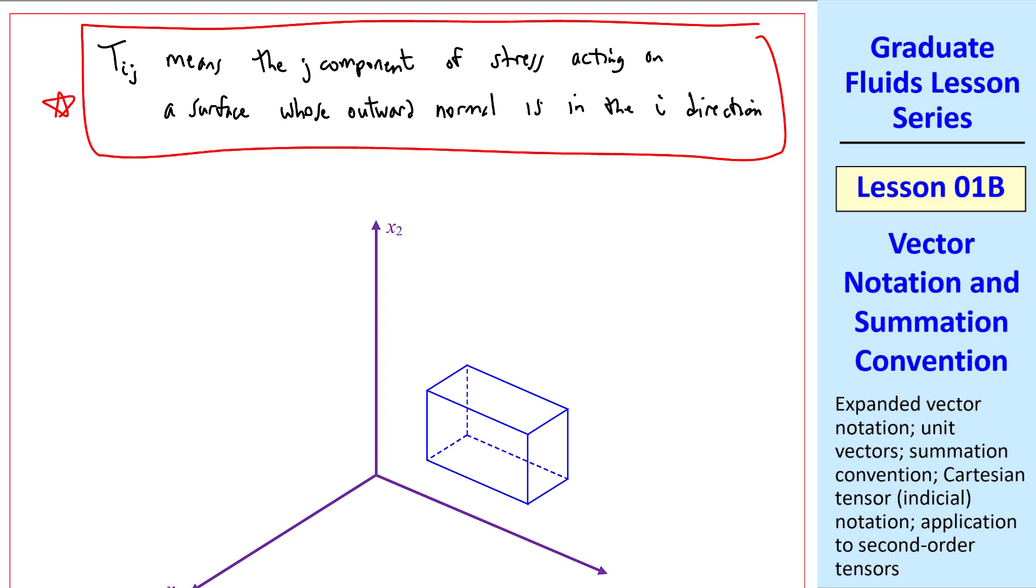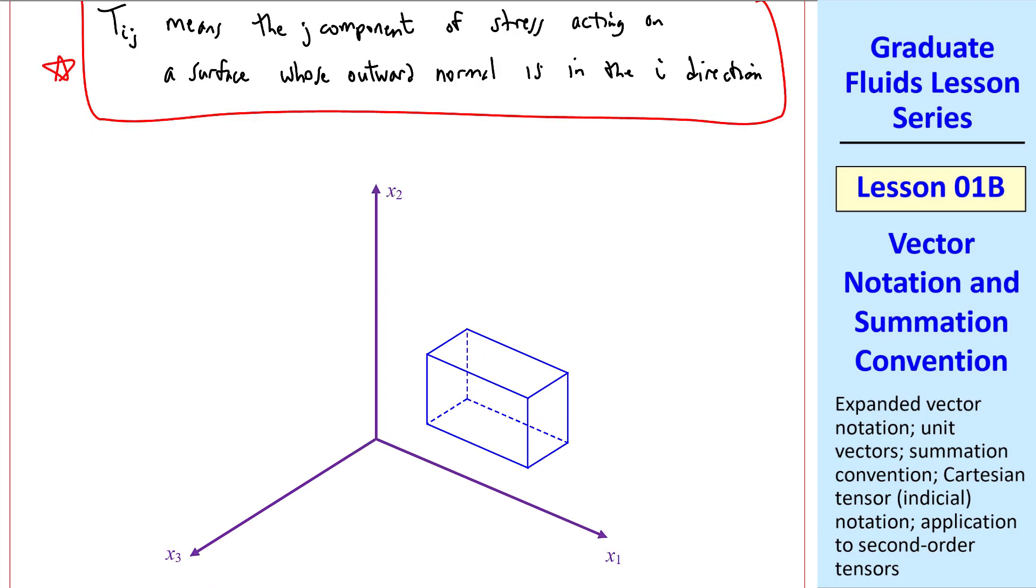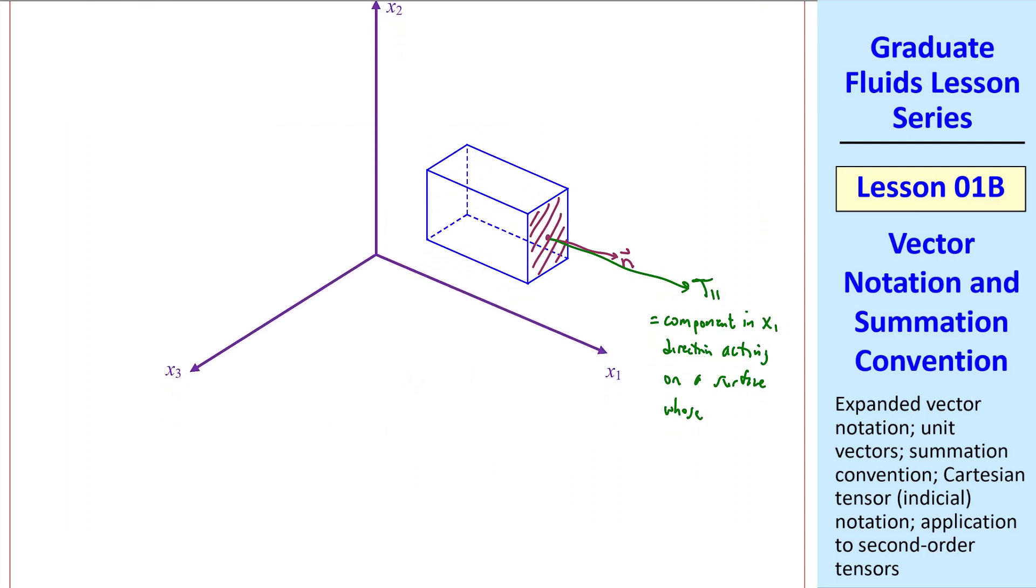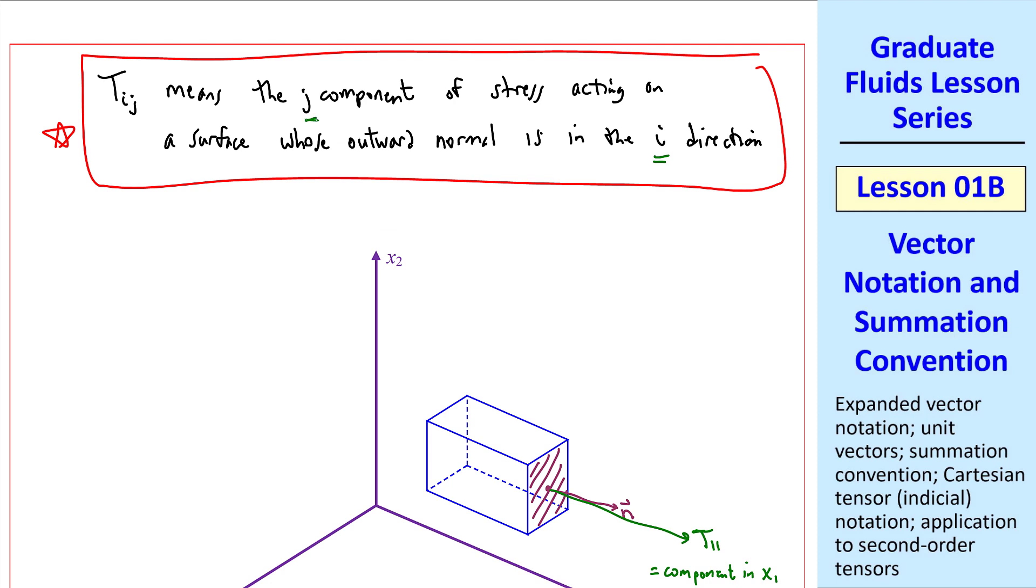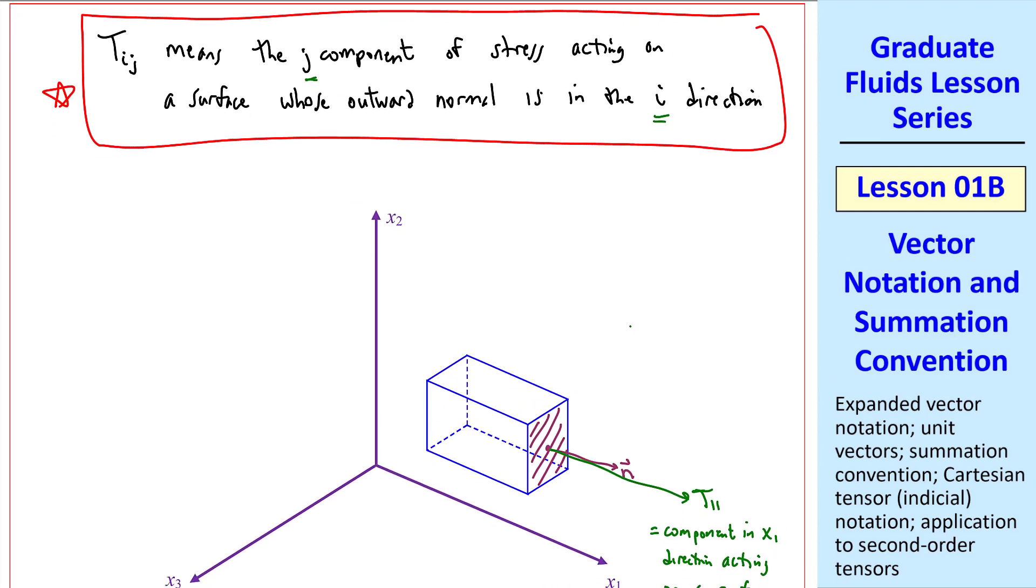And then in Cartesian coordinates, we simply define the stress tensor by its components. Let's take, for example, a fluid element and consider this face whose outward normal is in the x1 direction. By our convention, t11 would be the component in the x1 direction acting on a surface whose outward normal is also in the x1 direction. I'll write this out formally. t11 is the component in the x1 direction acting on a surface whose outward normal is in the x1 direction, where the first index indicates the direction of the outward normal, and the second index represents the component of the actual stress on that surface.